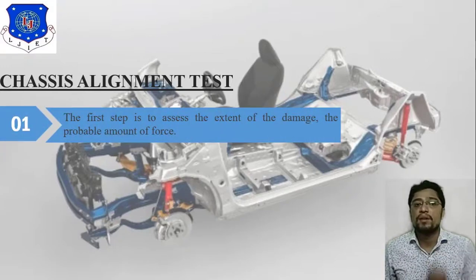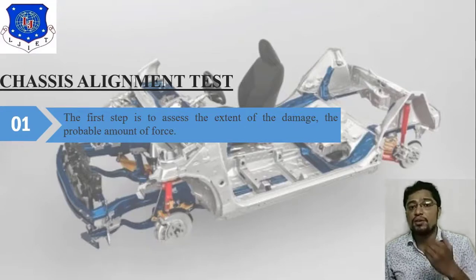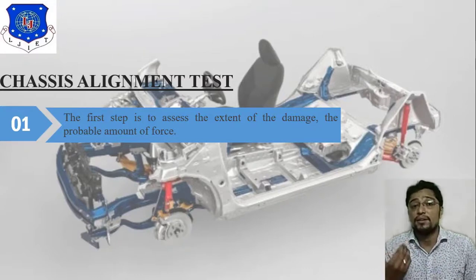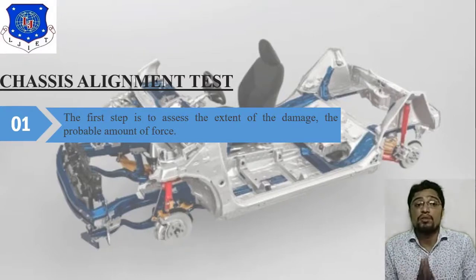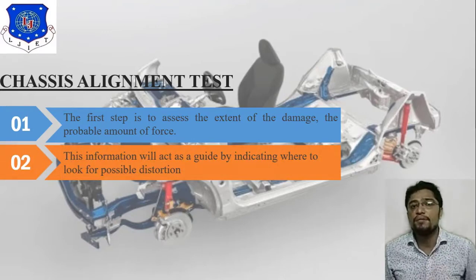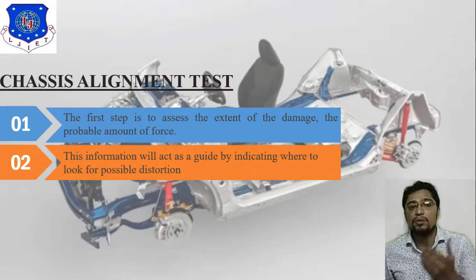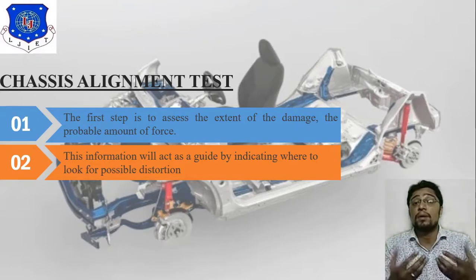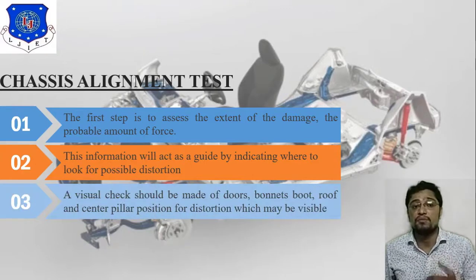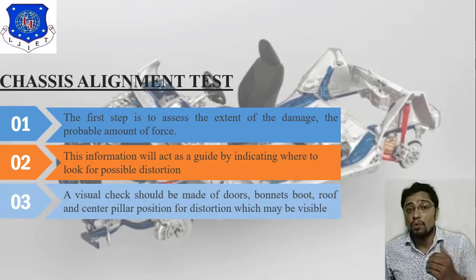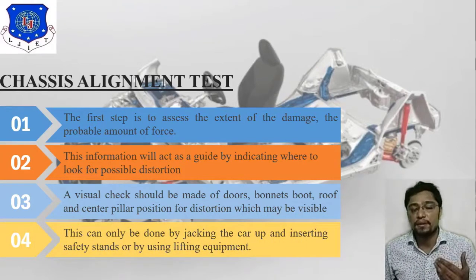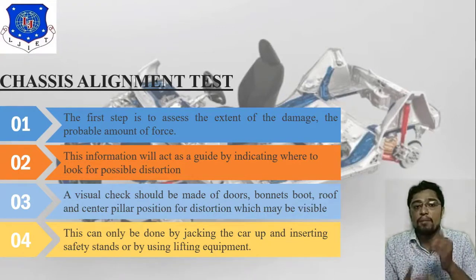The first step is to assess the extent of damage and the probable amount of force. Many forces act on a car body — vertical force, driving force — so we need to consider different types of forces in simulation. Second, this information will indicate where to look for possible distortion. Third, a visual check should be made of doors, bonnets, boot, roof, and central pillar position for visible distortion. Finally, this can only be done by jacking the car up and inserting safety stands or by using lifting equipment.